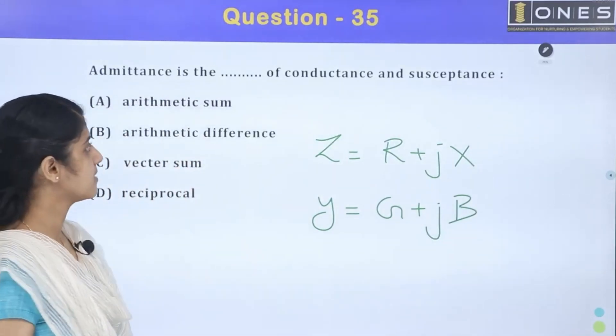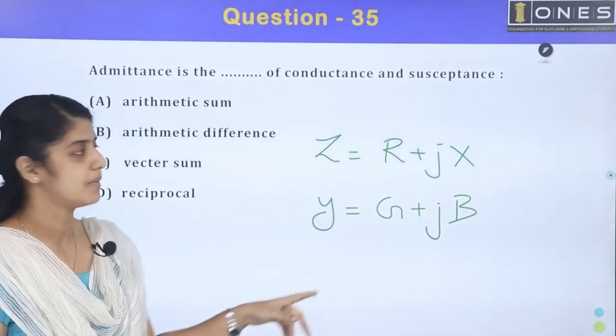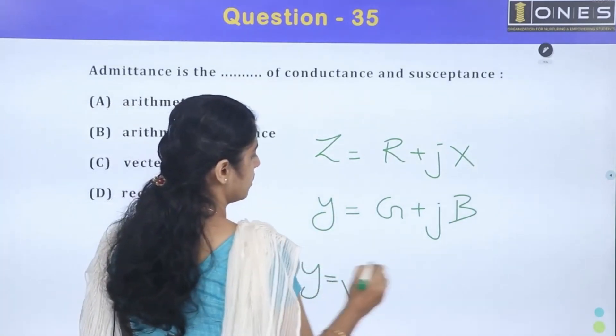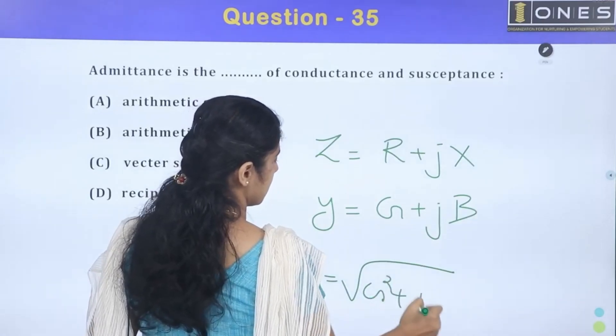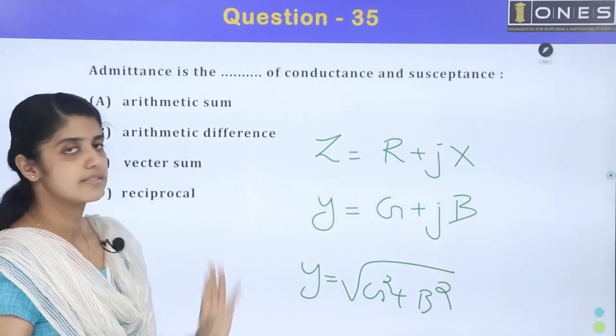This is the sum of normal sum. This is the sum of vector sum. Admittance is the sum: Y is equal to root of G squared plus B squared. Vector sum of conductance and susceptance.